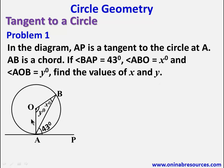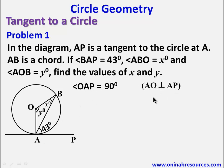Looking at the diagram carefully, AP is a tangent to the circle at A, AB is a chord, angle BAP is 43 degrees, angle ABO is X degrees, and angle AOB is Y degrees. Since OA is a radius and AP is a tangent, OA is perpendicular to AP. So angle OAP is 90 degrees, because OA is perpendicular to AP.